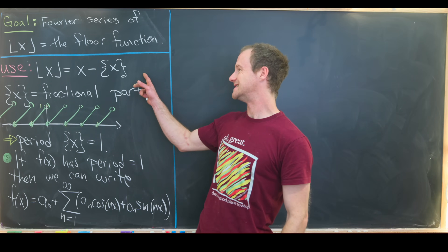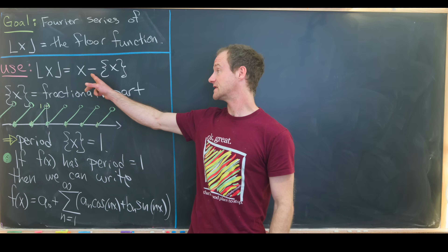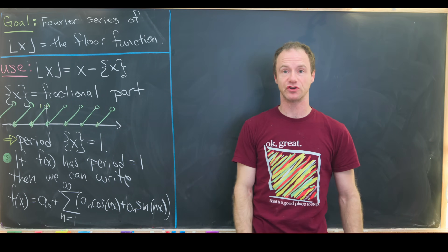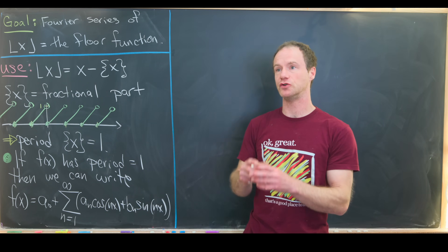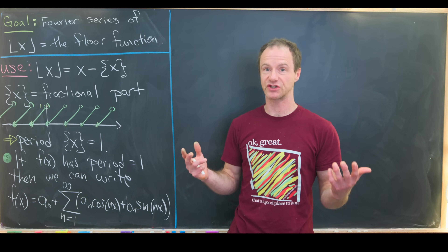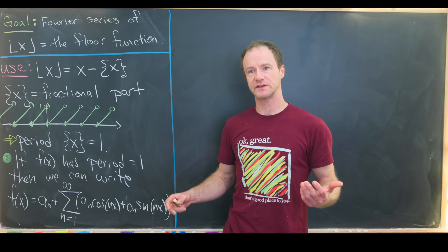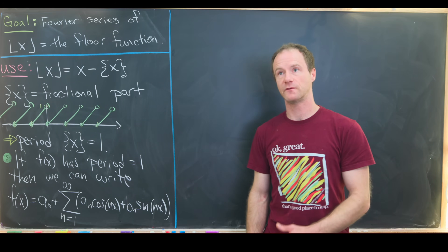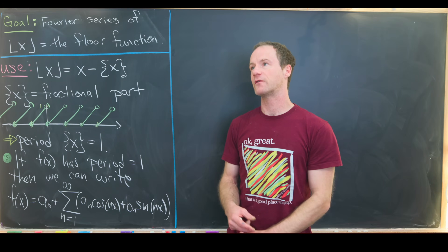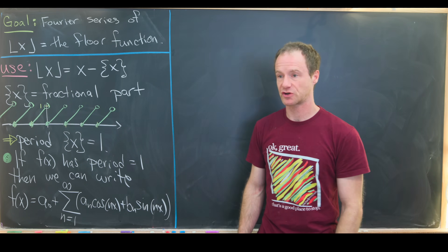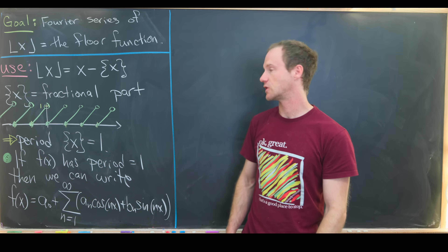We're going to use the decomposition of the floor function as x minus something called the fractional part of x. The fractional part is exactly what it sounds like — you forget the whole number part of x and keep just the part between zero and one. For example, the fractional part of 4.79 is 0.79, the fractional part of 10 is zero, and the fractional part of 100.5 is one half.